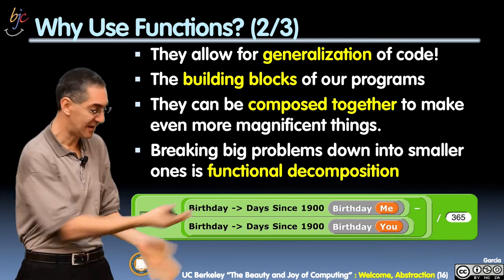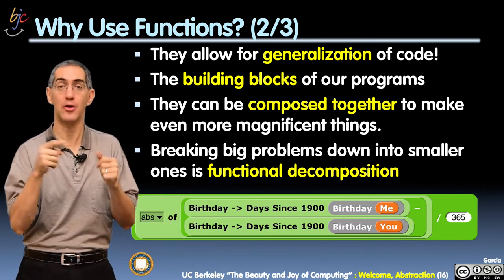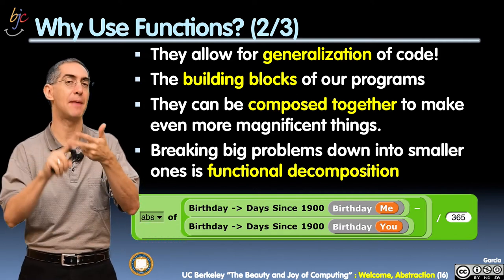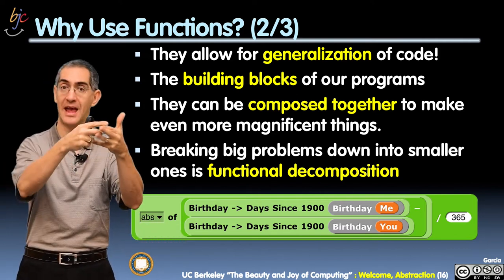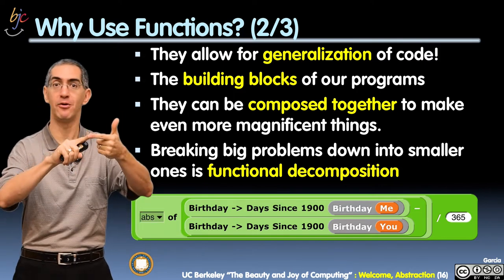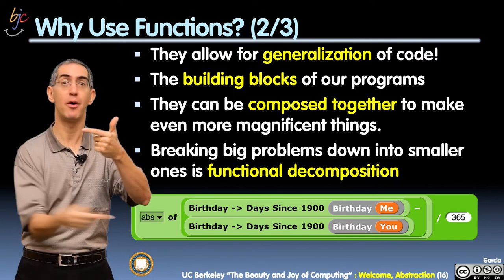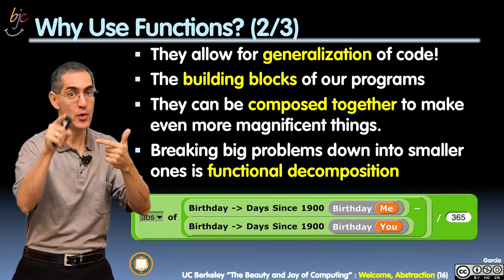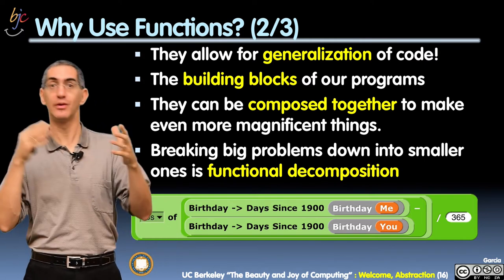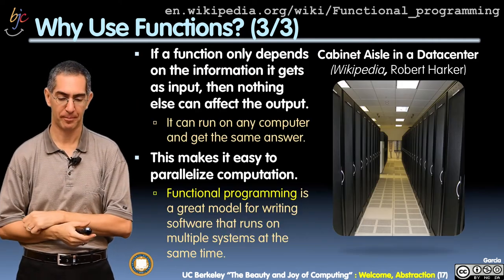I'm breaking it into these five different sub-problems. I might have had to write all of those blocks — the divide block, the absolute block, and the subtract block came built-in. But the other two blocks — birthday and birthday-to-number-of-days-since-1900 — were not part of the system; you had to write them. It's really cool that putting them all together makes this beautiful expression that makes it all work.